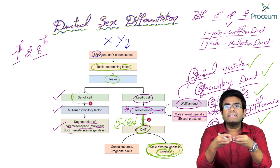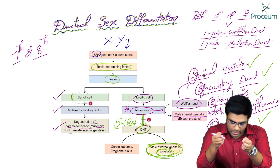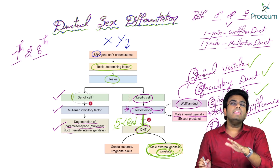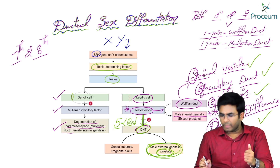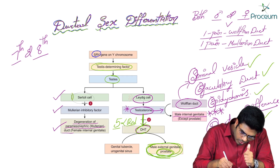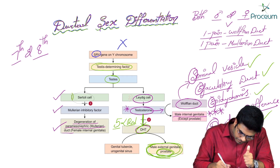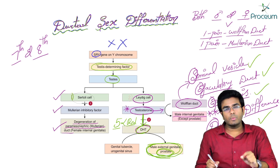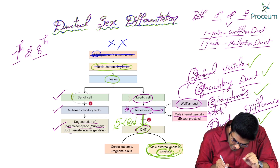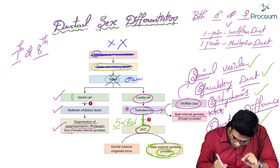Now let's see about the ductal expression in a female — how the Mullerian ducts are expressed. A female will have two X chromosomes, so there is no Y chromosome, no SRY gene, and no Testis Determining Factor. Instead of testis, there is development of ovaries.